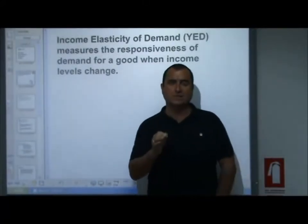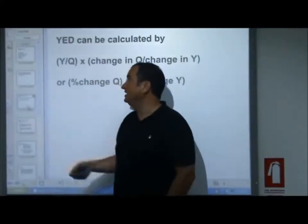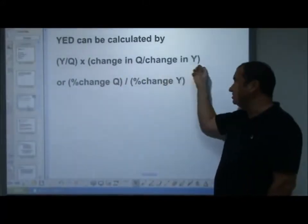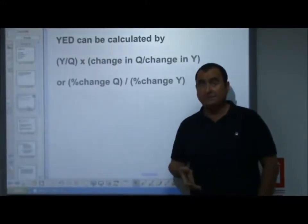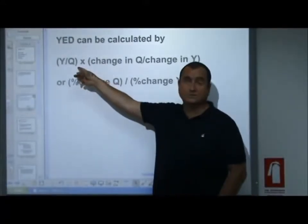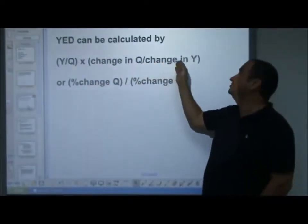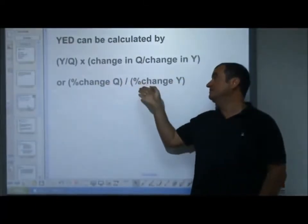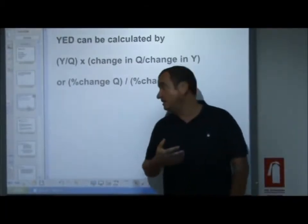There are two ways we can calculate the value of YED, using either of these two equations. The first is Y over Q times ΔQ over ΔY, because Y is income. The second equation you may use is percent change in quantity divided by percent change in income. Either of these equations will lead to the answer.